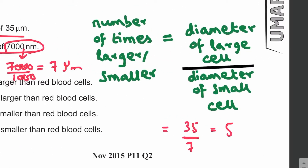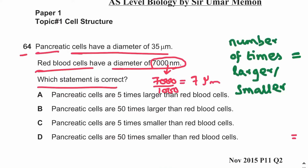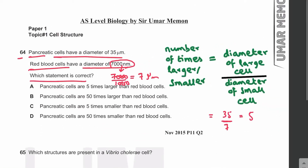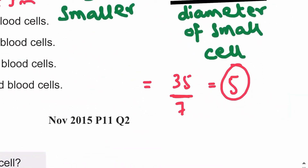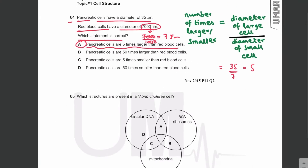This formula — diameter of large cell divided by diameter of small cell — gives you how many times larger or smaller a cell is. Since the pancreatic cell is five times larger than the red blood cell, the red blood cell is five times smaller than the pancreatic cell. The correct statement is A: pancreatic cells are five times larger than red blood cells.